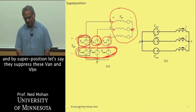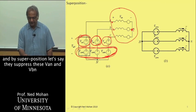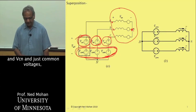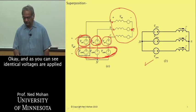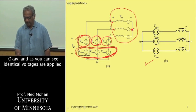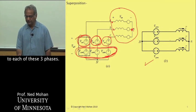By superposition, let's say we suppress these VAN, VBN, and VCN, and just have the common mode voltages. Then we get this circuit here. As you can see,